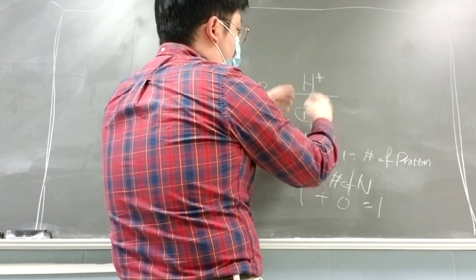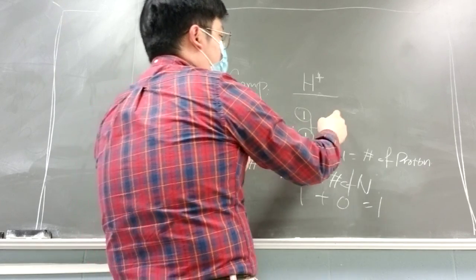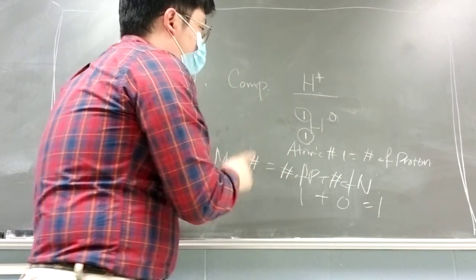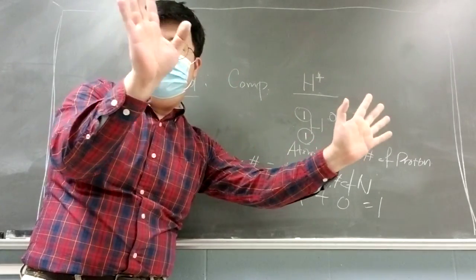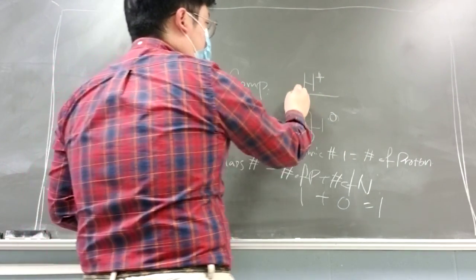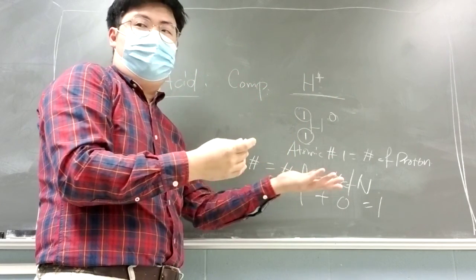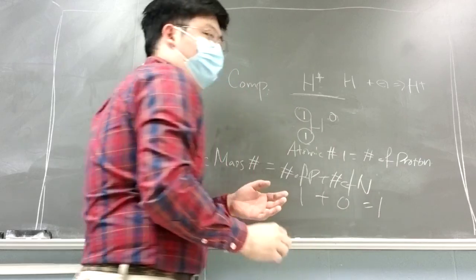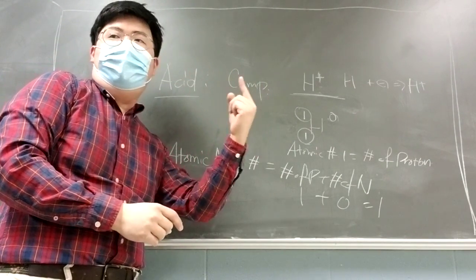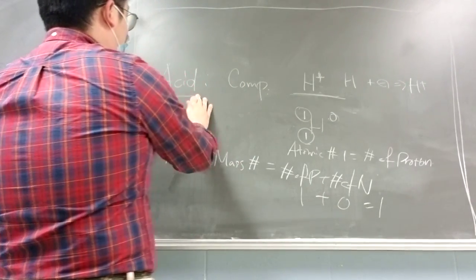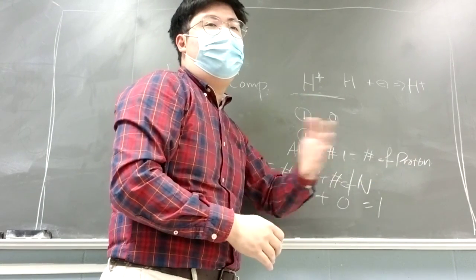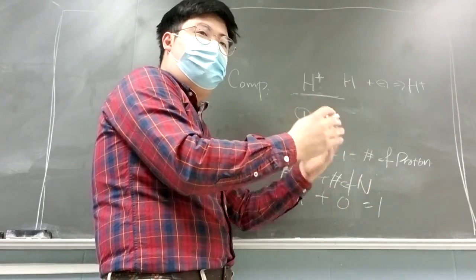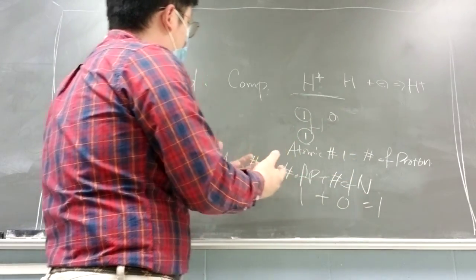Hydrogen is just one proton plus one electron — that's neutral hydrogen. A hydrogen cation is when hydrogen loses that electron, leaving just one proton. So hydrogen cation equals one proton. Any compound that donates a hydrogen cation — or proton — in solution, we define as an acid.